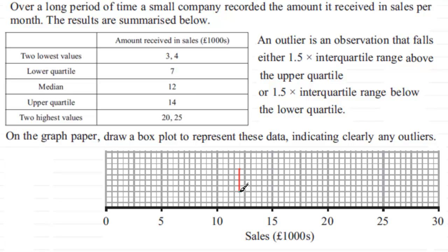Then we've got the lower quartile at 7. With two squares per unit, six is here and seven is there, so we draw a line down for the lower quartile. The upper quartile is at 14, so draw a line in there, and then we complete the box around this.